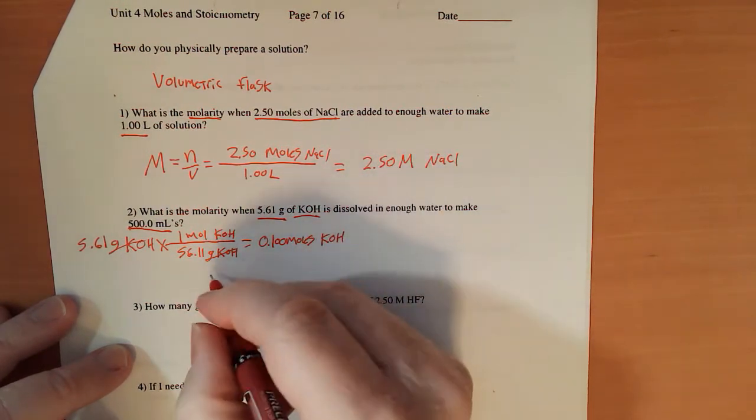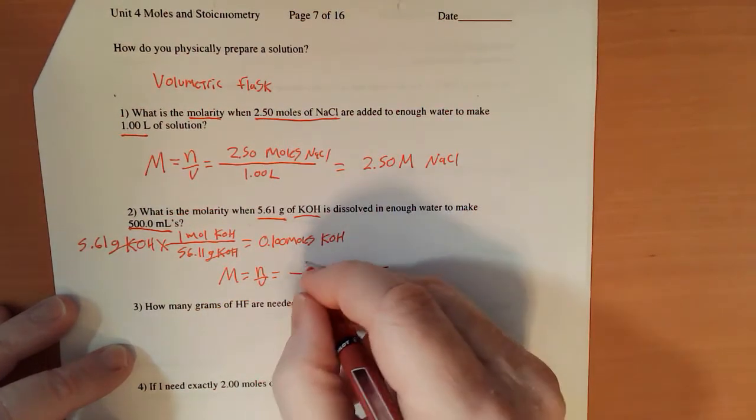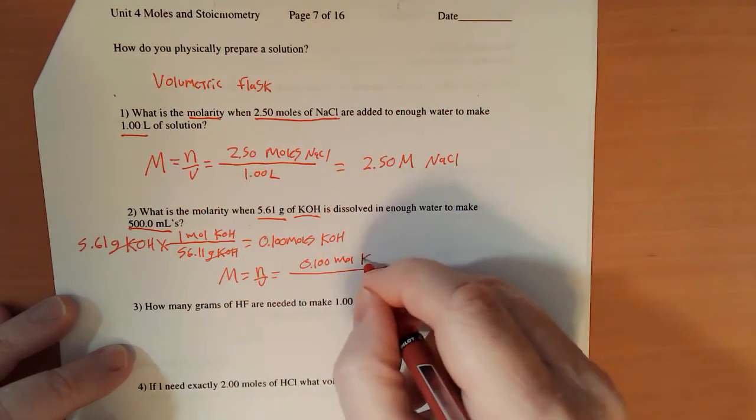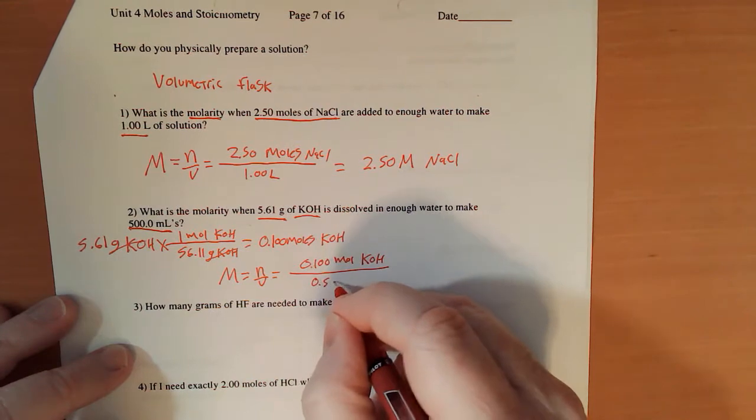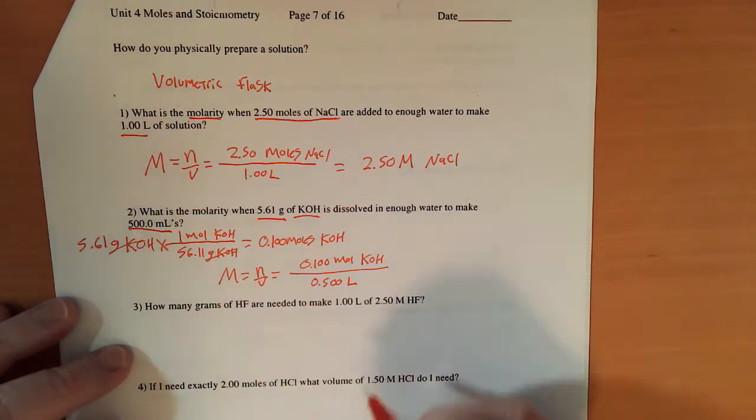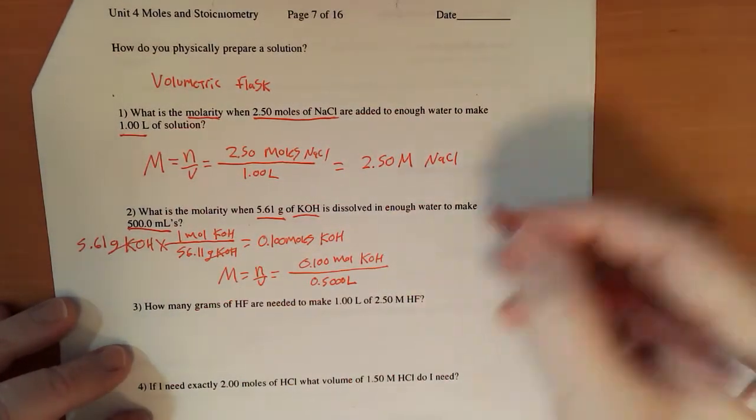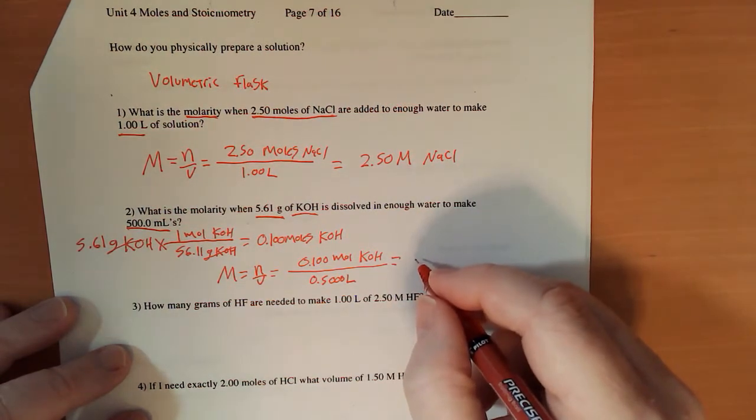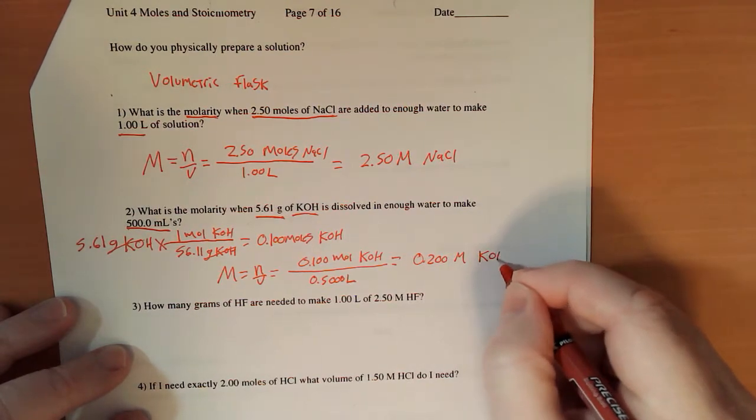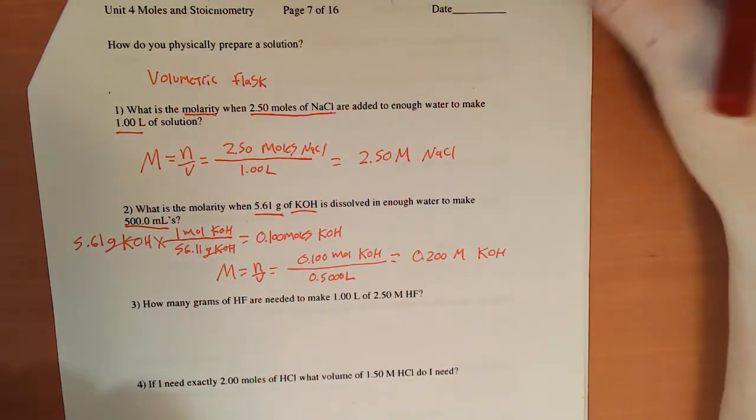So molarity is moles over liters, which equals 0.100 moles of KOH divided by 0.500 liters. Now that was the 500 milliliters converted to liters. And this comes out equaling 0.200 molar KOH. 3 sig figs divided by 4, my answer will have 3.